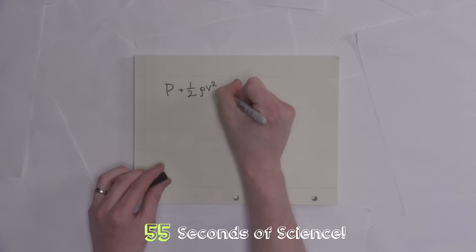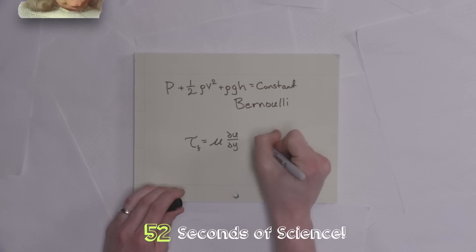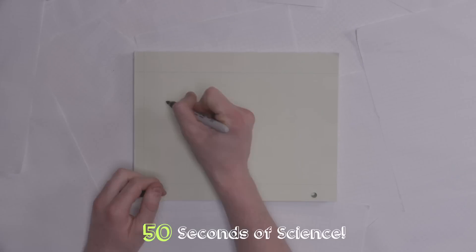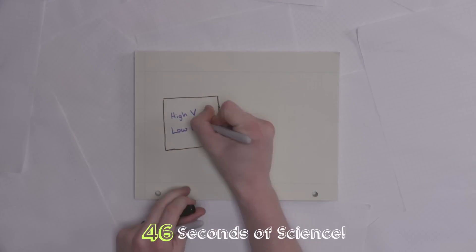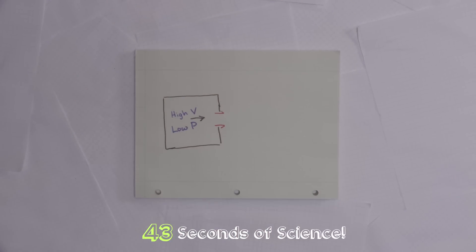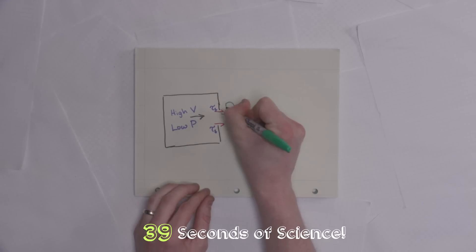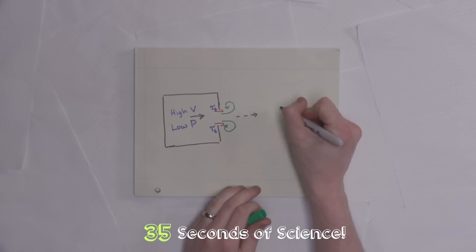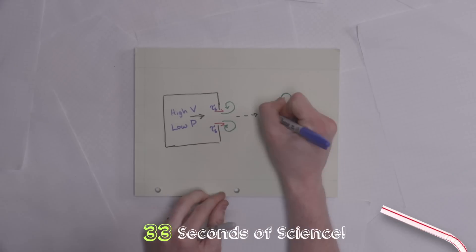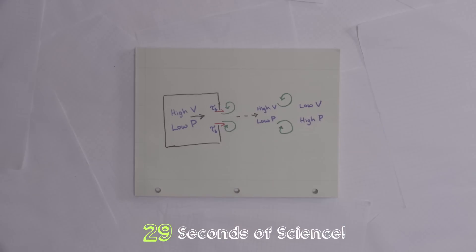First, a vortex ring forms from a combination of friction and Bernoulli's principle, which says that air pressure and velocity are related by a constant. High-velocity, low-pressure air is forced out of the vortex generator. When air leaves the generator, friction at the sides causes a shear force, which causes the air to begin to rotate. This rotation is enhanced by the low-pressure air behind the vortex ring getting sucked through the center of the ring by the high-pressure, slow-moving air ahead of it.